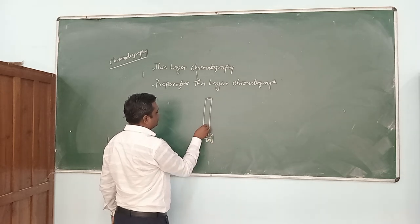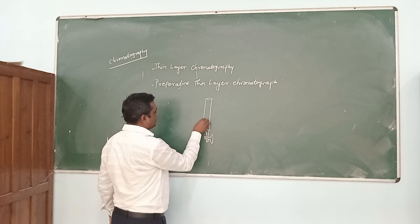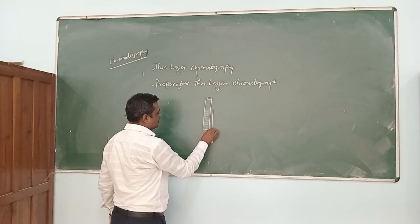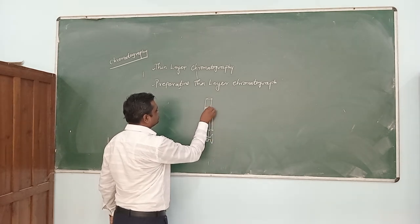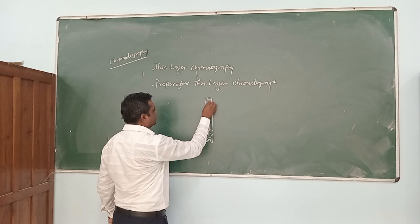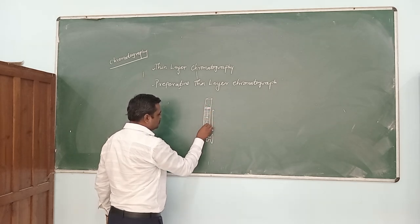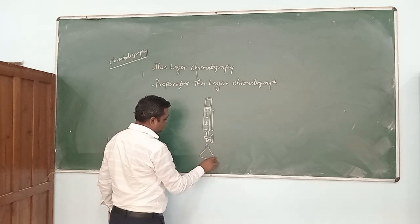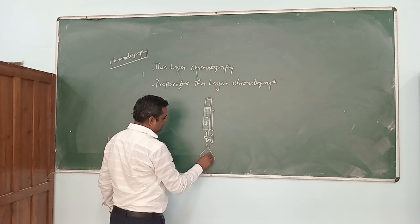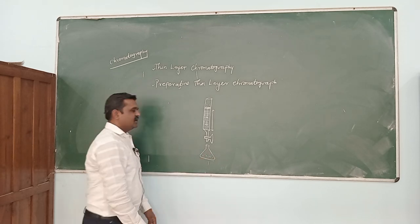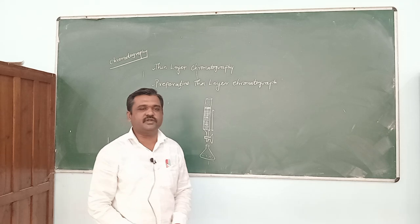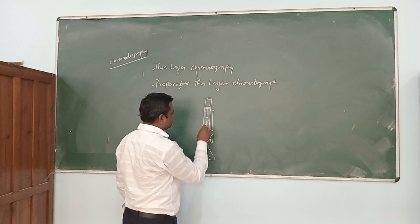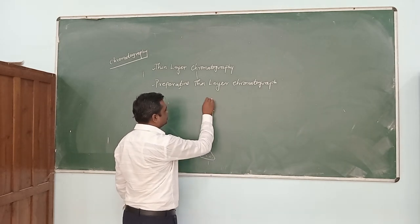The quantity of stationary phase will be decided according to the number of components. Silica is the stationary phase, and the sample is loaded here. Then solvent is added and separation of the components takes place. Here also, adsorption-desorption behavior is present. The components are collected in a pure state in conical flasks. The volume of each fraction is kept constant, and by checking thin layer chromatography (TLC), we can identify the components, mix the matching fractions together, and separate the components from the mixture using column chromatography.